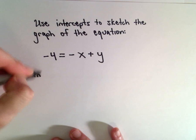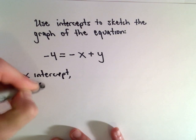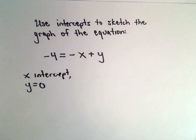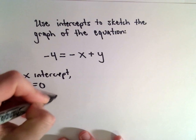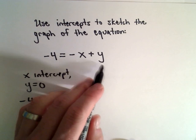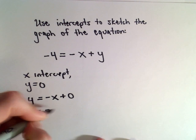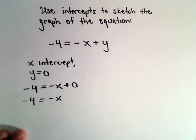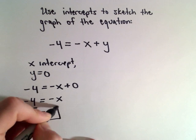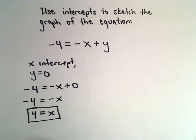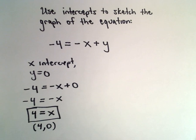So to find the x-intercept, we let y equal 0 and then we solve for x in our equation. Well, in that case we would have negative 4 equals negative x, well plus 0 when we let y equal 0. So we have negative 4 equals negative x. If we divide both sides by negative 1, we'll just get that x equals positive 4. Okay, so what that tells us, it says that the point (4, 0) is going to be a point on the graph.